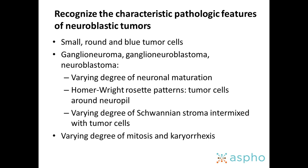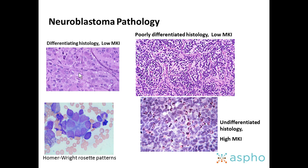The boards want you to recognize pathologic features of neuroblastoma. These are small round blue cell tumors. Depending on the type of neuroblastic tumor, you will see varying degrees of neuronal differentiation — Homer-Wright rosette patterns are classic for neuroblastoma. There will also be varying degrees of Schwannian stroma intermixed with neuroblasts, and varying degrees of mitosis and karyorrhexis. Examples include a very differentiated tumor with large neuronal-type cells, a poorly differentiated tumor with smaller round blue cells and less neuropil background, and undifferentiated tumor with no ganglion differentiation. A Homer-Wright rosette pattern in bone marrow metastasis is also shown.